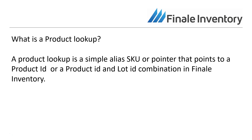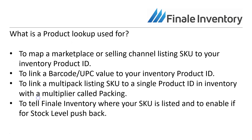Or it points to a product ID and lot ID combination in Finale Inventory. That's a lot to take in, so let's break it down. What is a product lookup used for? It's used to map a marketplace or selling channel listing SKU to your inventory product ID in Finale — they may be the same or they may be different. You also use a product lookup to link a barcode or UPC value to your inventory product ID.